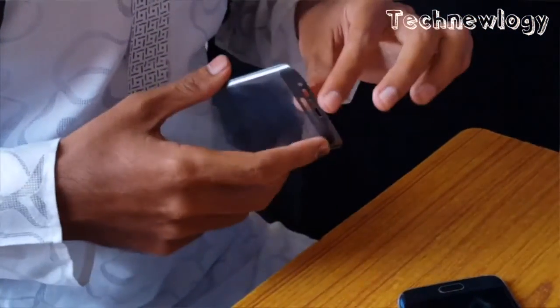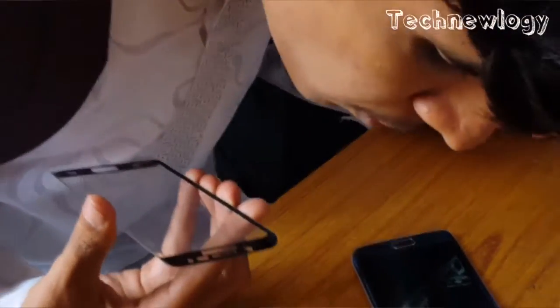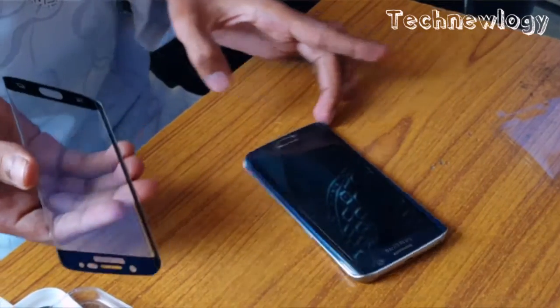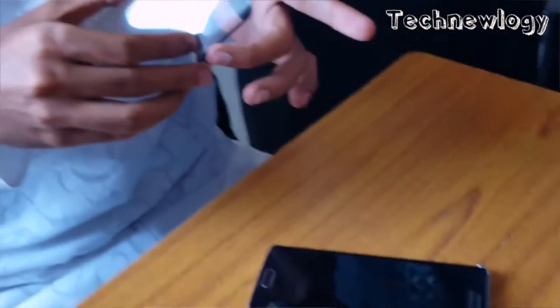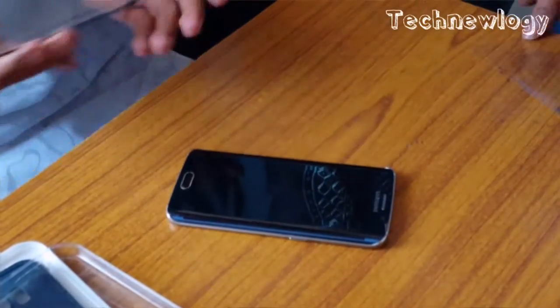But the S6 Edge, S6 Edge Plus, or the latest S7 Edge have that curved glass at both sides. So today we will be looking at how to apply tempered glass on these devices.